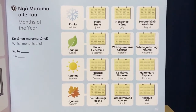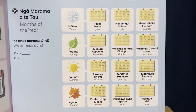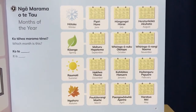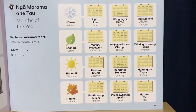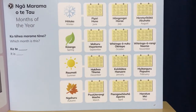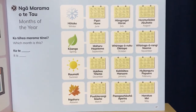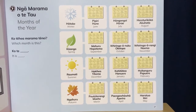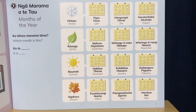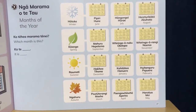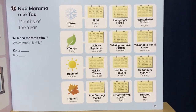Let's look at spring, which is coming soon: kōanga. For September we've got mahuru and hepetema. For October we've got whiringa ānuku and ōketopa. And for November, whiringa ārangi and noema.